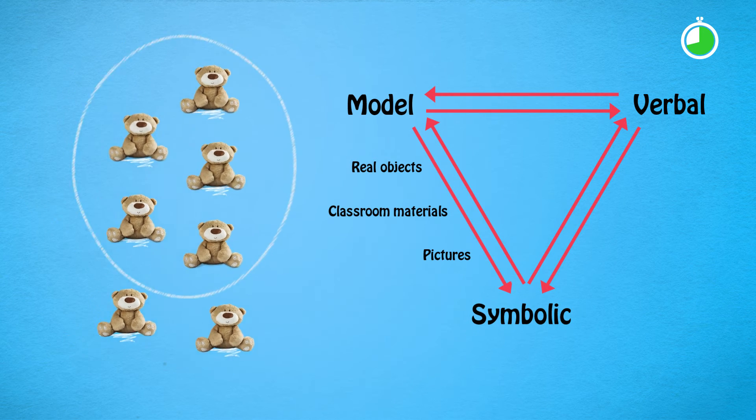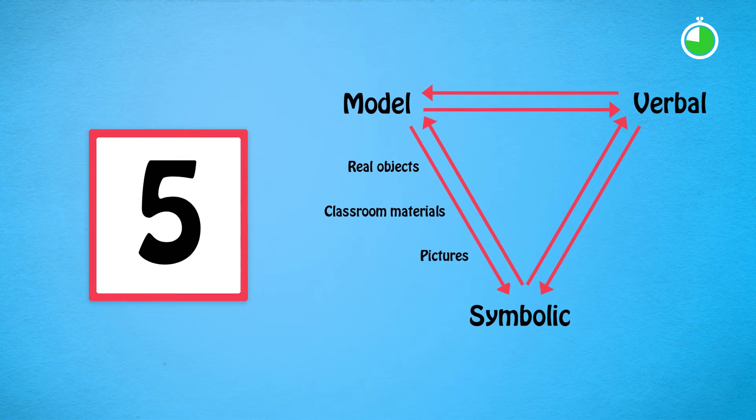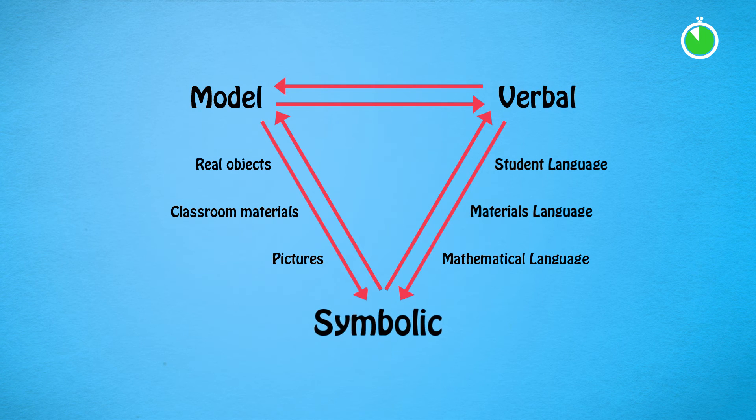Similarly, you can show them the symbol for five and ask them to draw that many bears. And we shouldn't forget the right side of the teaching model. Students need experiences that move between the verbal and the symbolic. That's right.